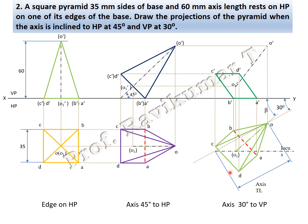Looking from the bottom, the bottom face is completely visible — draw with visible lines. Outer edges are visible and joined with visible lines. B to O is the invisible edge because that point is away from the observer. The key difference between the two problems: in the previous problem, the final position is edge of the base inclined to VP; in this problem, the axis is inclined to VP — making it a locus problem.